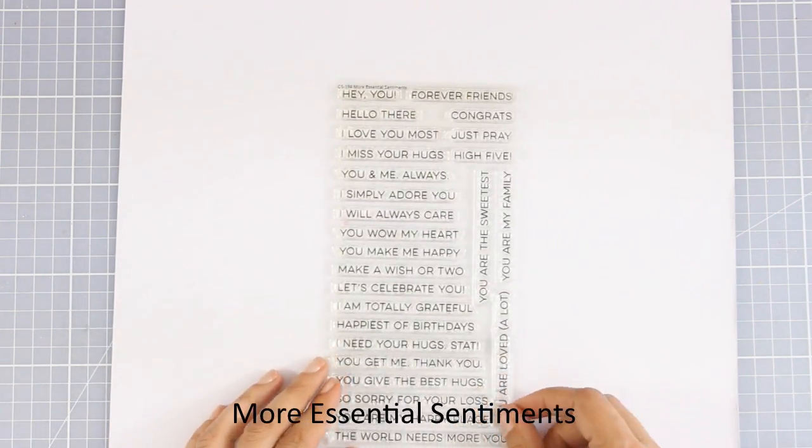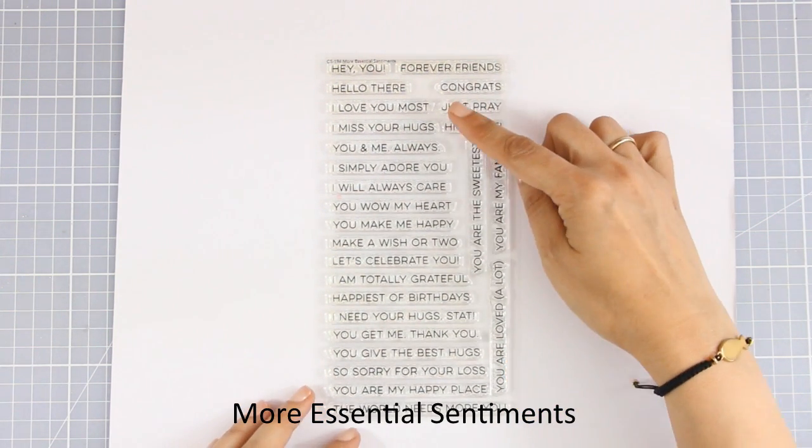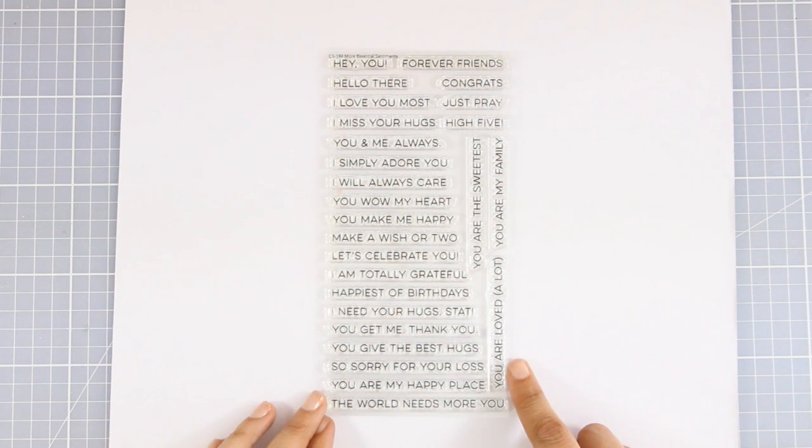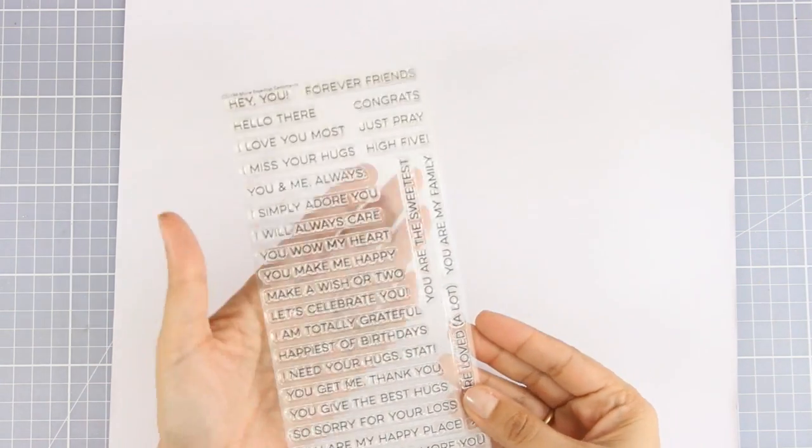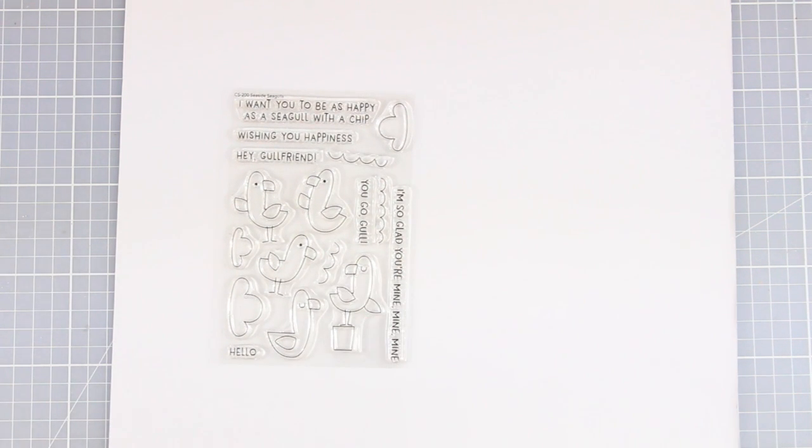And now let's move on to the last large stamp set for this release. This is again 4x8, called More Essential Sentiments, and it has a bunch of sentiments that you will ever need for any occasion. There are actually 26 different sentiments, and if you're in need of a stamp set that has different sentiments for your cards, this is essential because it will take you through birthdays, celebrations, congratulations, to even sentiments for a loss and many more.